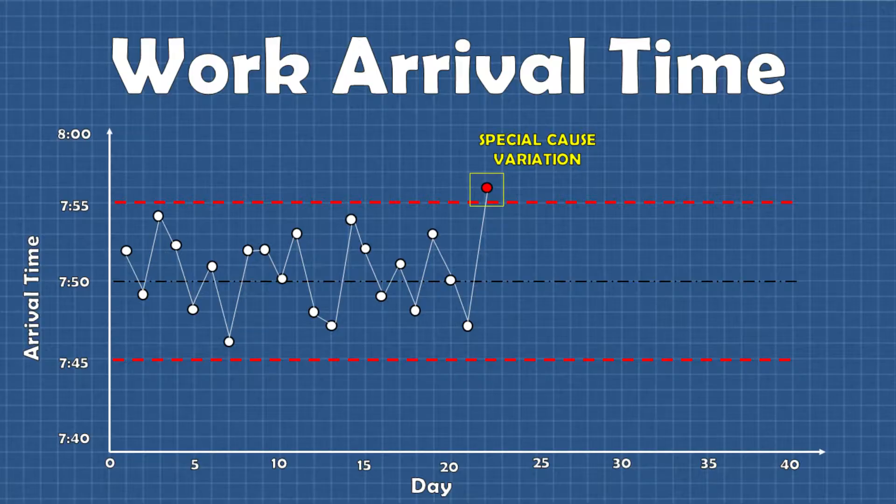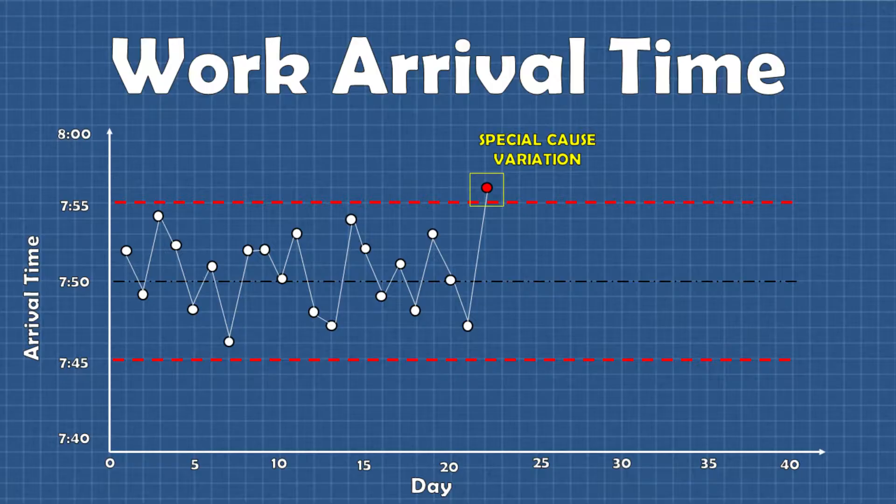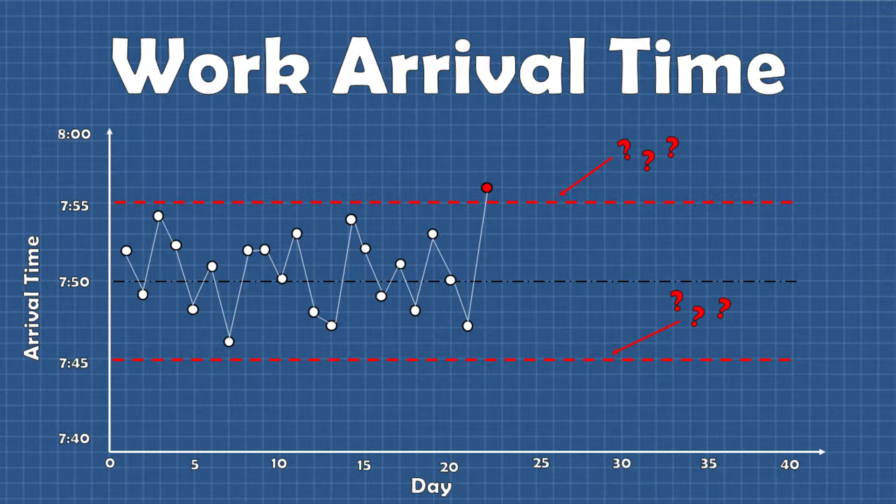So control charts help us separate and visualize common cause variation and special cause variation and that's really what separates control charts from your basic run charts or time series plots. But how exactly do we determine what is common cause from special cause? In other words where do we draw the line on what amount of variation is considered common? Because as we talked about there's always going to be some amount of variation but the key is determining how much variation is abnormal.